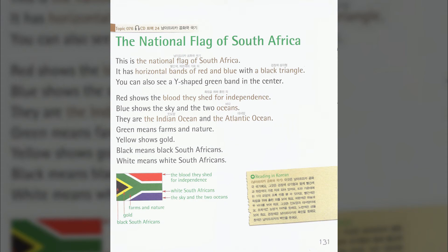South Africa. Topic 76: The National Flag of South Africa. This is the National Flag of South Africa. It has horizontal bands of red and blue with a black triangle.